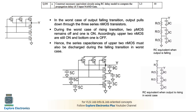Next question: construct the necessary equivalent RC delay model circuits to compute the propagation delay of a three-input NAND gate. First write the three-input NAND gate structure with capacitance and resistance parameters. For the worst case output falling transition, the output is pulled down through the three series N-MOS transistors when all three gate inputs are one, turning on all three pull-down transistors and turning off the pull-up transistors.